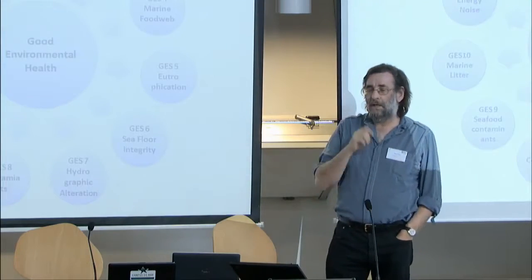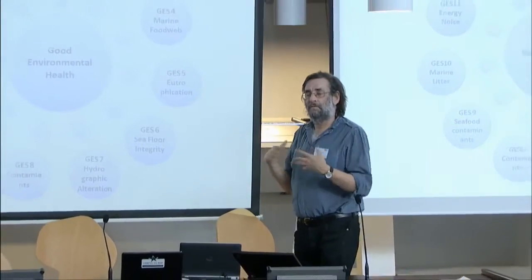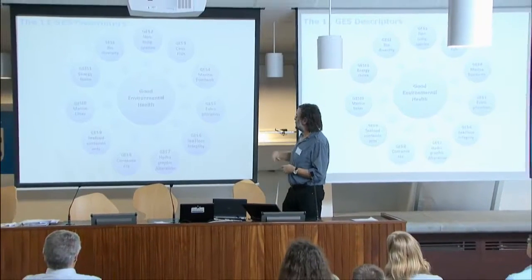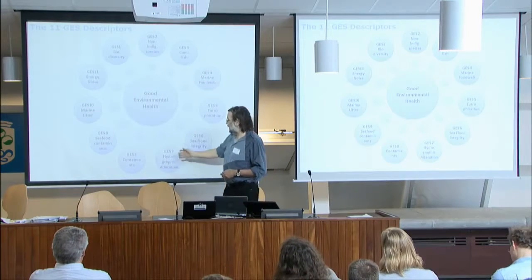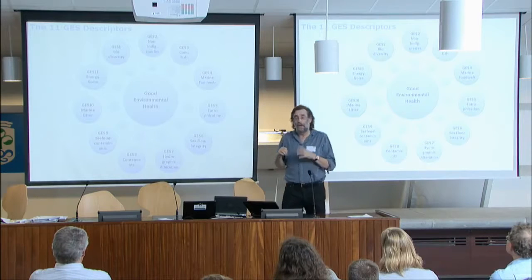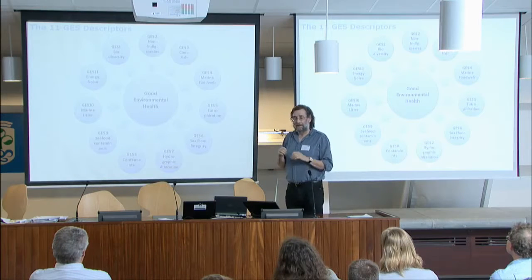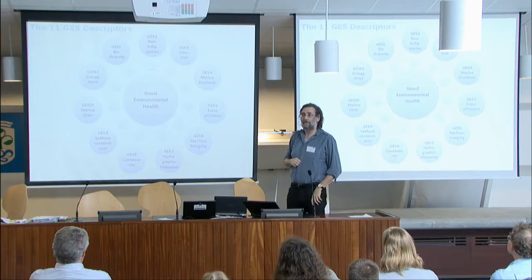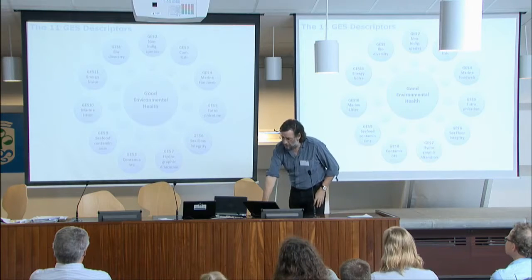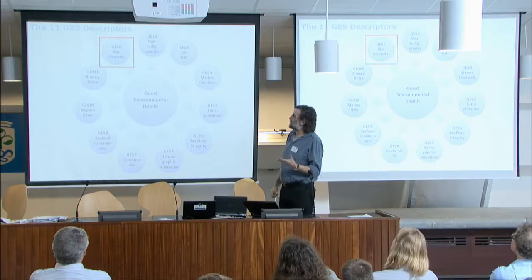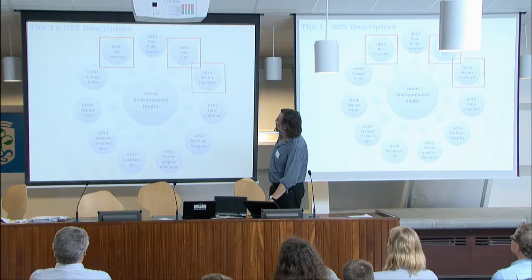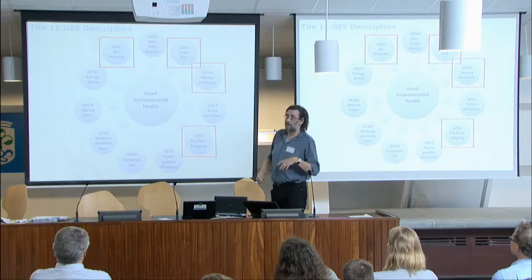These are the 11 good environmental status indicators. They cover things like eutrophication, hydrographic alteration, and marine litter — my personal favourite being that ICES has developed a Latin binomial for all the litter. The key ones, however, are biodiversity, commercial fish, the marine food web, and seafloor integrity.